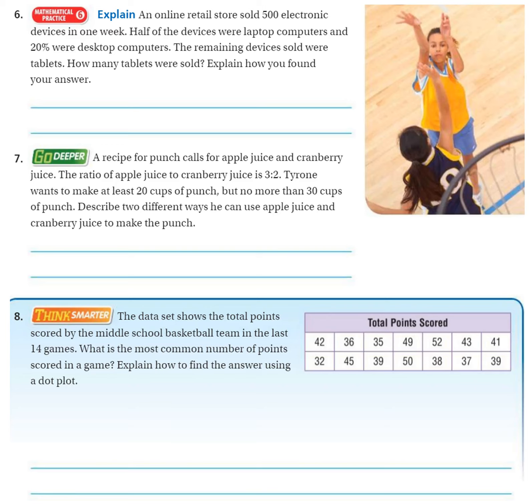All right, now I am on page 506, the bottom part of 506. Number six: an online retail store sold 500 electronic devices in one week. Half of the devices were laptop computers and 20% were desktop. The remaining devices sold were tablets.